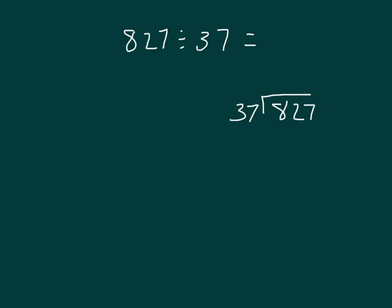Here I have another problem: 827 divided by 37, and I've also written it right here. We start with this 8, and this 8 is worth 800s, and we see whether or not we can divide that 800s by that 37. Can we?